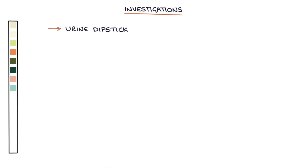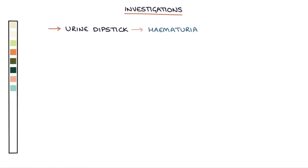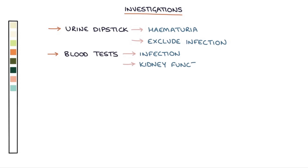A urine dipstick test usually shows hematuria in cases of kidney stones, though a normal urine dipstick does not exclude kidney stones. Urine dipsticks are also helpful to exclude infection. Blood tests can help establish signs of infection and assess kidney function. Checking the serum calcium helps identify hypercalcemia, which may have been the cause of the kidney stones.